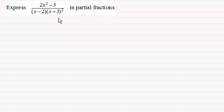Okay, welcome back then if you had a go. So to do this let's just first of all copy down that fraction 2x squared then minus 3 divided by x minus 2 and then x plus 3 all squared.